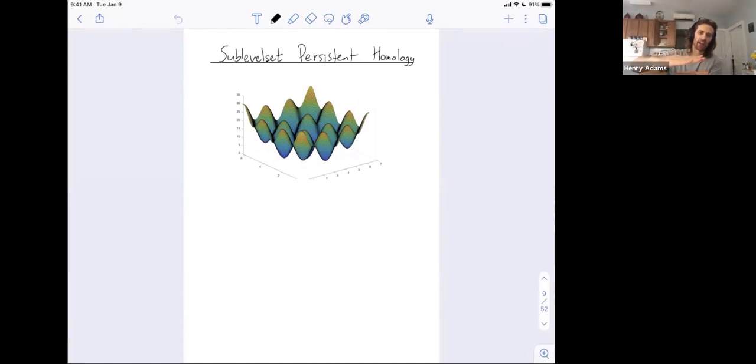So when you chop at a low height you only include very few portions of your space, but as you raise the height level and you chop at that height you're including more and more regions of the bottom square.